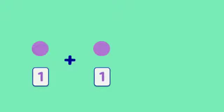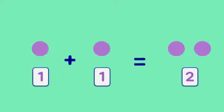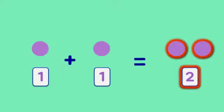One circle plus one circle equals how many circles? Count all together. One and two. So there are two circles. One plus one equals two.